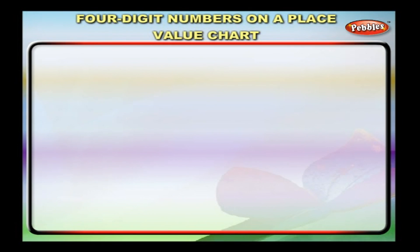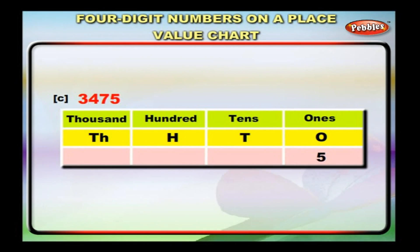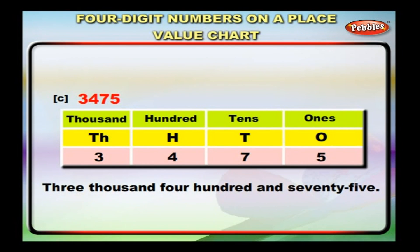The next number is three thousand, four hundred and seventy-five. Bring five to the ones column, seven to the tens column, four to the hundreds column, and three to the thousands column. We have three thousands, four hundreds, seven tens and five ones. We write this as three thousand, four hundred and seventy-five.